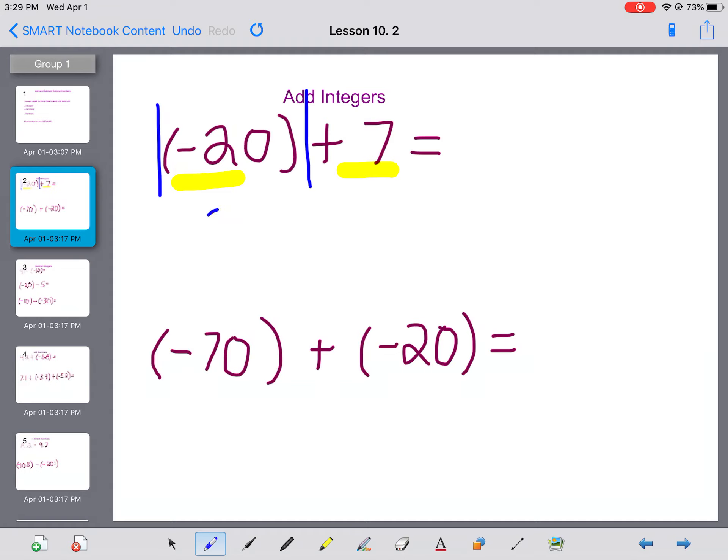Then what we can do is we can find the difference between our two numbers absolute values. The difference in this case is 13. So the difference between 20 and 7 is 13 using the absolute value of 20. But then we look at which number originally, which one has the greatest value and what was it originally. So 20 has the greatest absolute value and originally it was negative. So my answer is still negative 13.